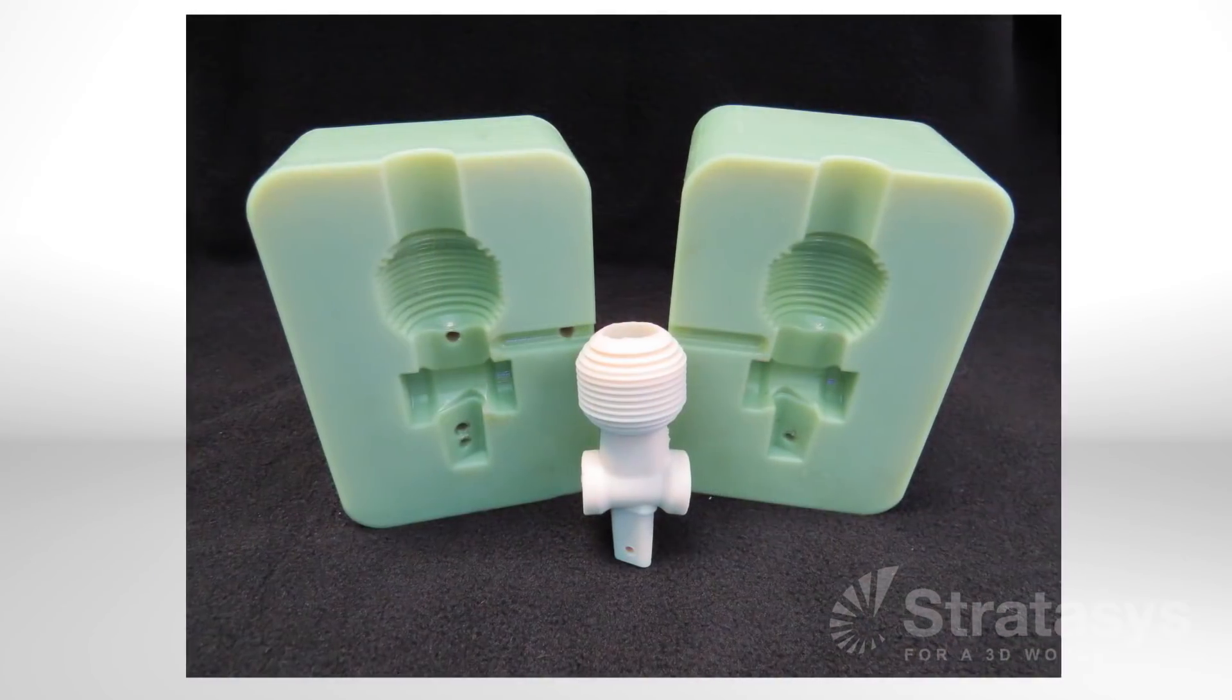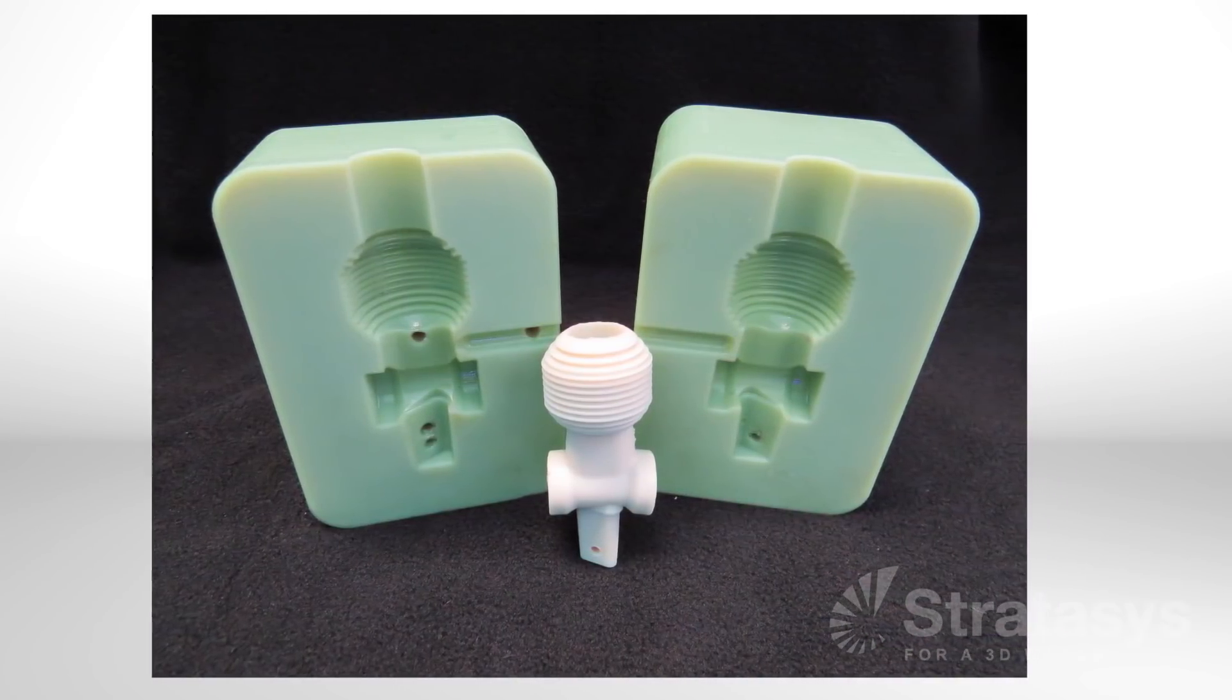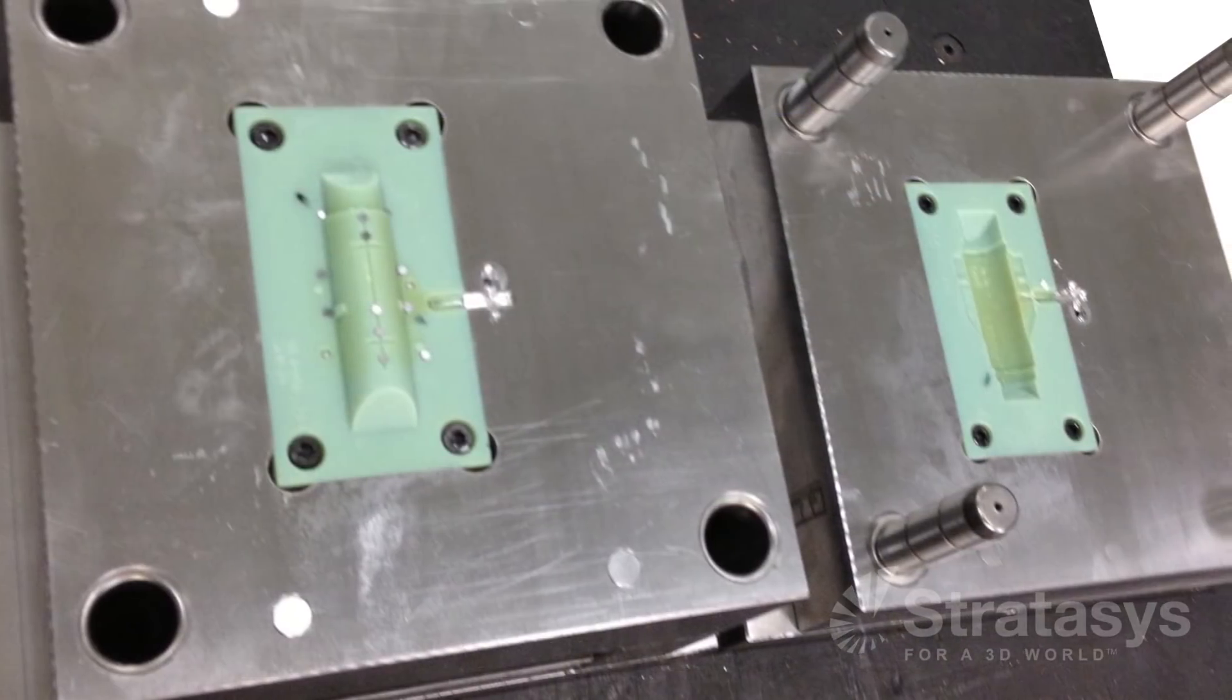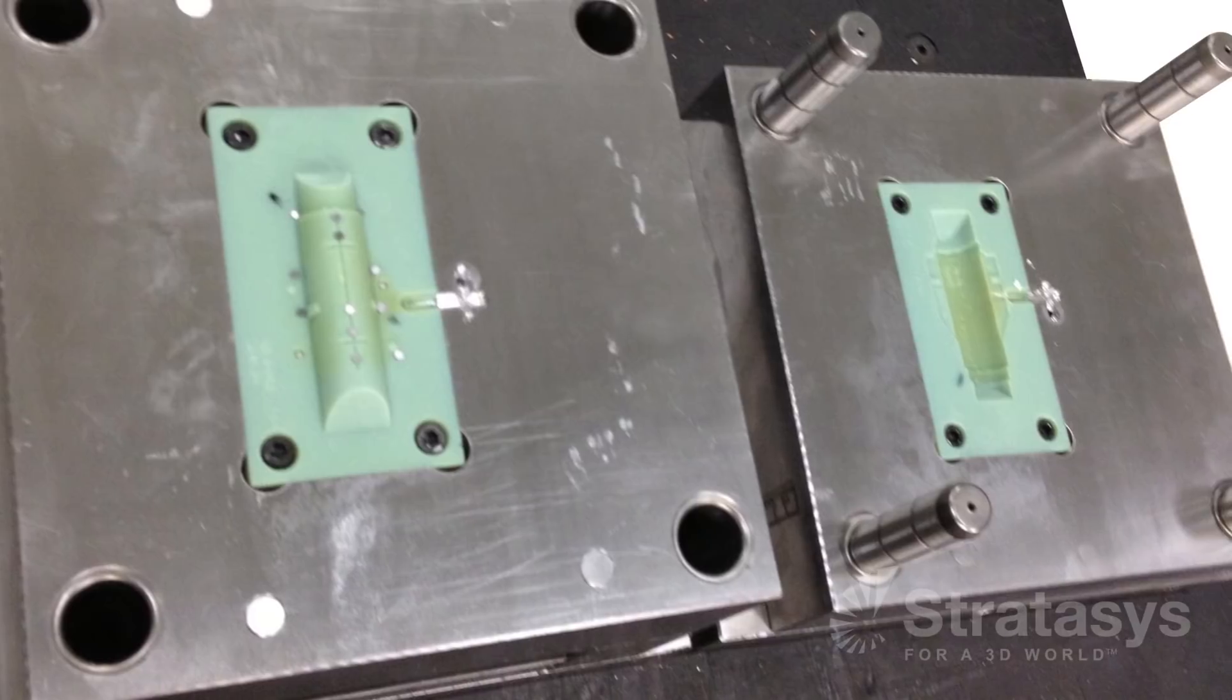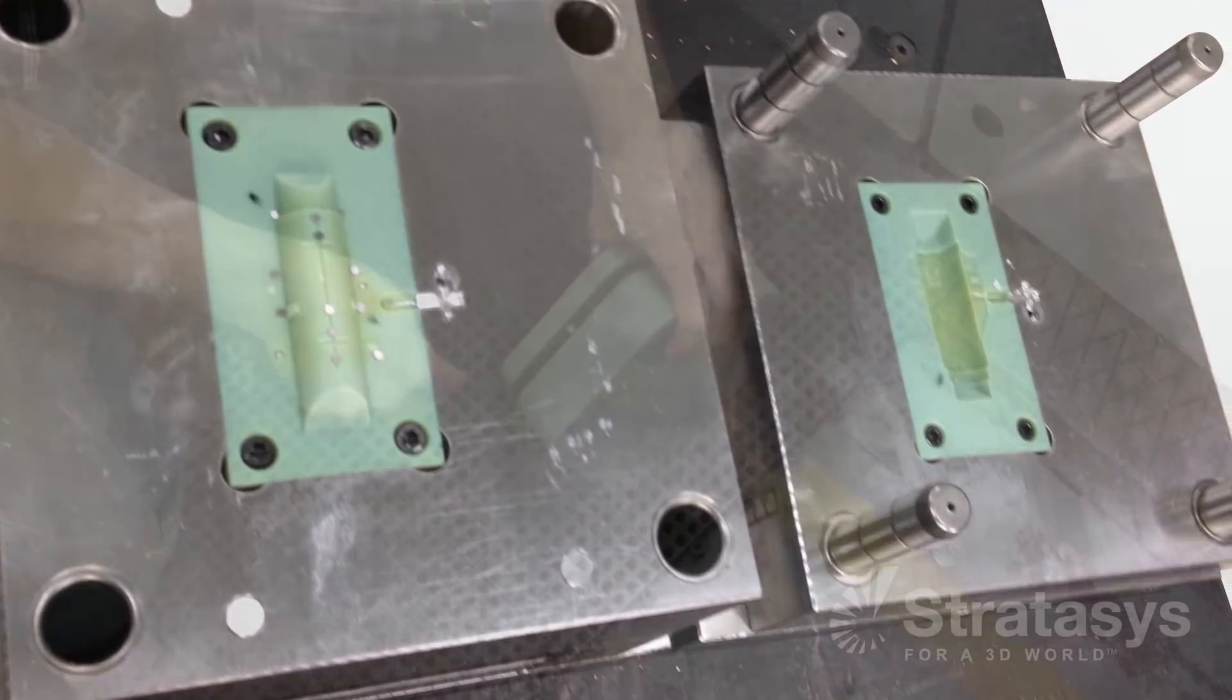In the injection molding process, plastic is heated and injected into a tool, which has a core and cavity side. Although not made of aluminum or steel, the common metals for injection molds, the process is the same when using 3D printed plastic molds.